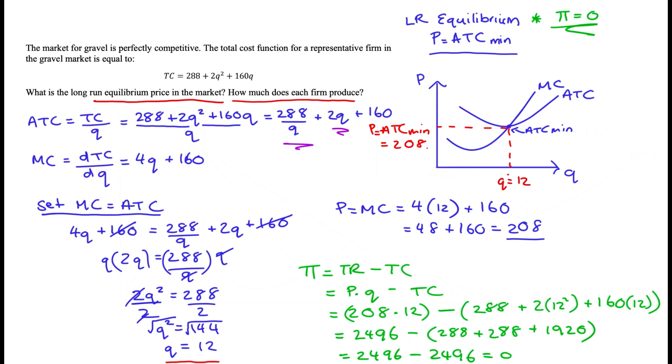And 288 plus 288 plus 1920 is actually equal to 2496, which is exactly as it should be. And we get that result: the profit is equal to zero. So that just confirms that we've basically got the equations and the math right. So that's it, I hope it helped.